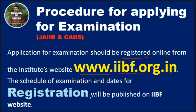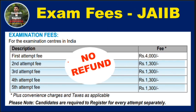Before taking the examination, you first need to be an ordinary member of IIBF. JAIIB examination fees: for the first attempt, Rs. 4000 plus conveyance charges and taxes. For the second attempt, Rs. 1300 plus conveyance charges and taxes. For the third and fourth attempts, Rs. 1300 plus conveyance charges and taxes each. There will be no refund for the amount paid.